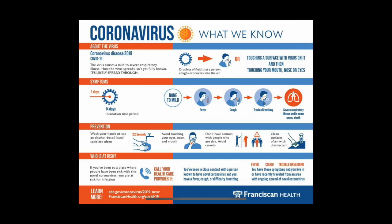The first infographic is from Francine Health Organization. It's kind of along the lines of a PSA and it is titled 'Coronavirus: What We Know.' It is formatted to be read in sections lengthwise, covering four different topics: about the virus, symptoms, prevention, and who is at risk.